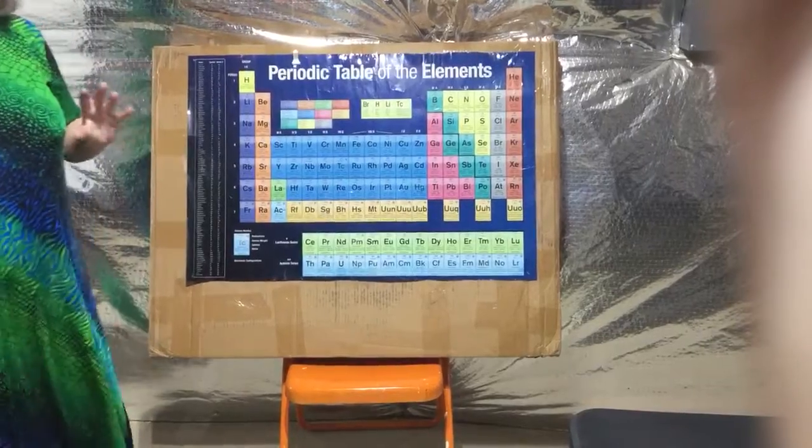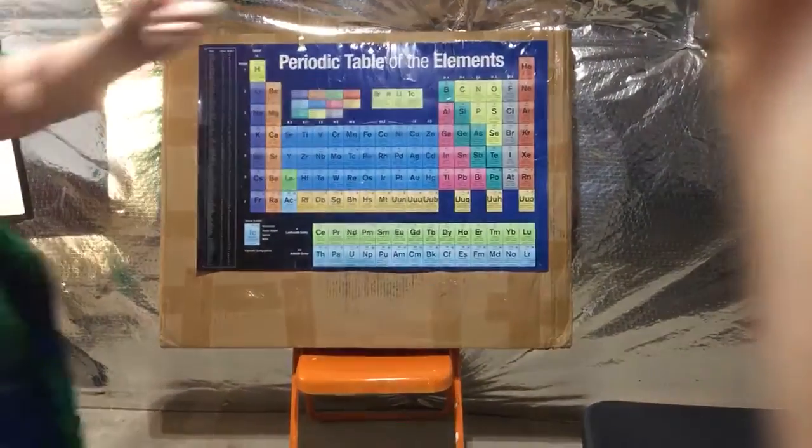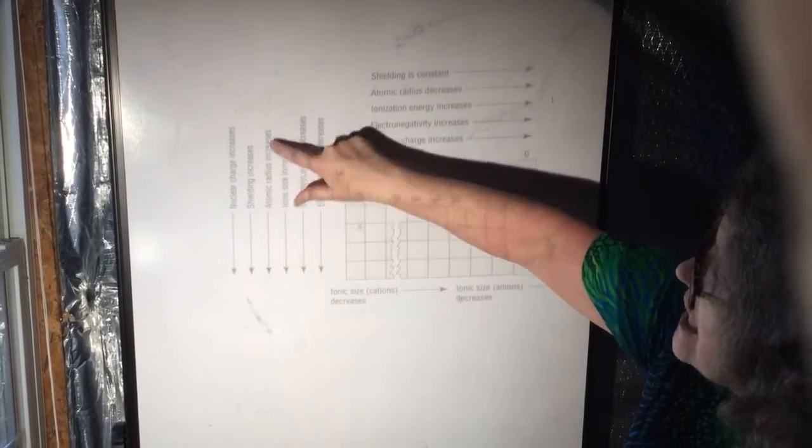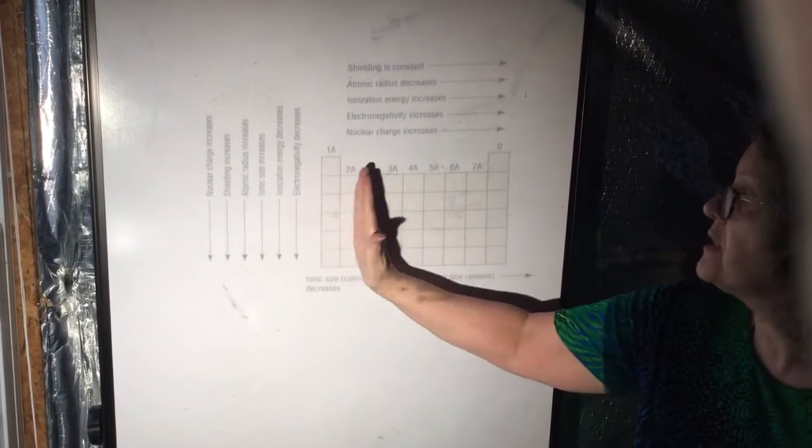These S and P elements are called main group or representative elements — they are the ones that represent the patterns. So this is a summary of the different patterns. For example, the atomic radius — as we go down the columns or family, the atomic radius increases. As we go from left to right across the periods, the atomic radius decreases.